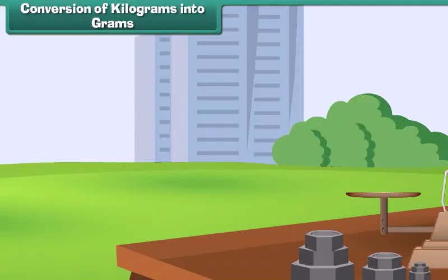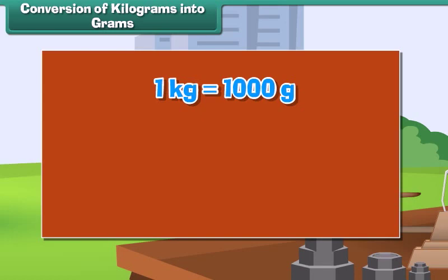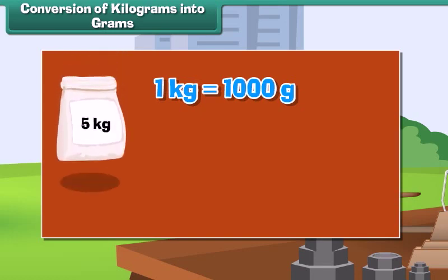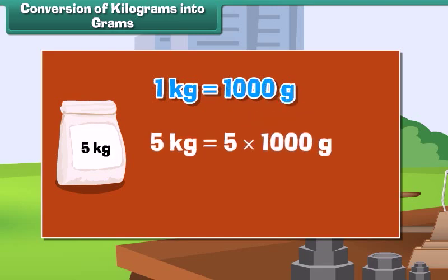Conversion of kilograms into grams. 1 kilogram is equal to 1000 grams. Therefore, the weight of a 5 kg rice bag can be calculated as: 5 kg is equal to 5 into 1000 grams, which equals 5000 grams.